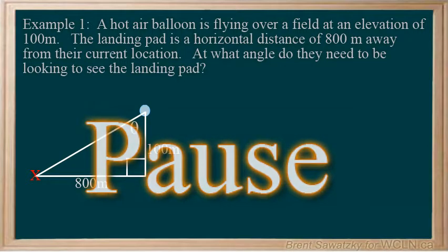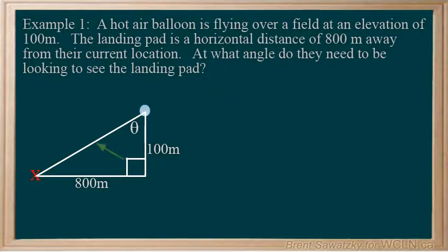Let's see if you're right. The hypotenuse is across from the 90 degree angle, so here. Our reference angle is our theta, so opposite to theta is the horizontal distance, 800 meters, here. And adjacent to theta is our elevation, 100 meters.